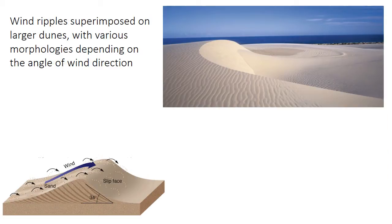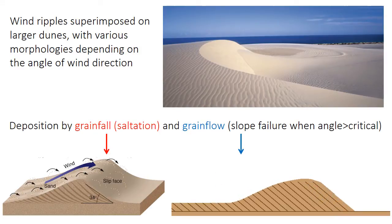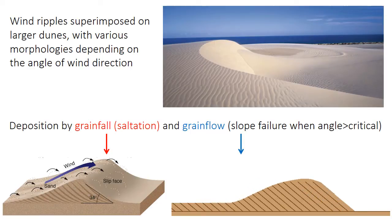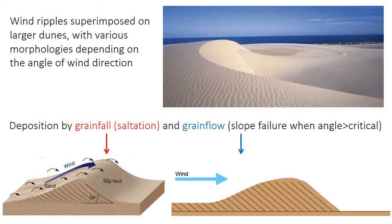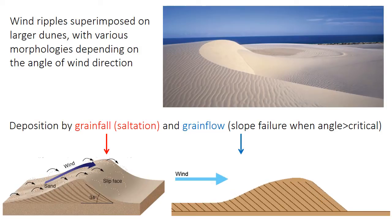Really large sand dunes are the most obvious feature of aeolian environments and of the sedimentary deposits from aeolian environments. The sand making up these dunes accumulates basically in two ways: grain fall, which is the individual deposition of single sand grains by saltation, and grain flow. In grain flow, sand moves towards the crest, building it up and over-steepening it. When the slope angle at the crest exceeds a critical angle, the crest fails and a blob or flow of sand slides down the slope in a large package.